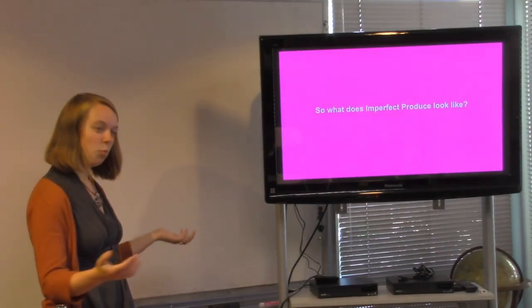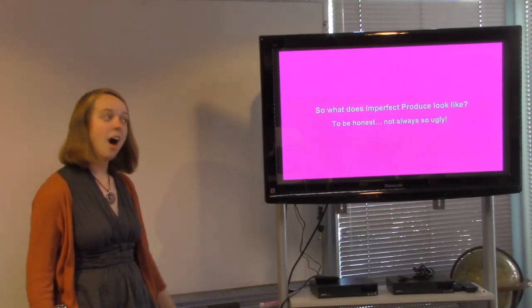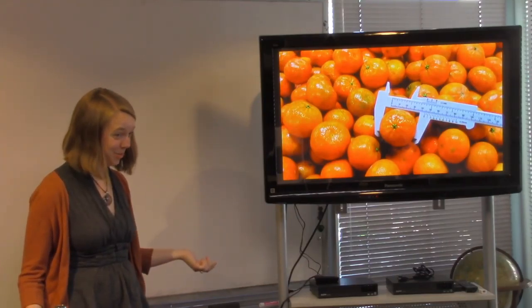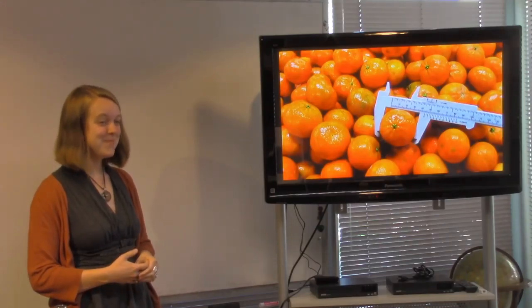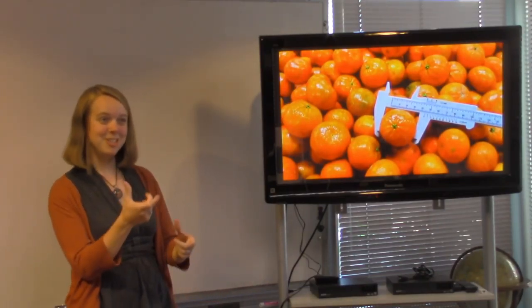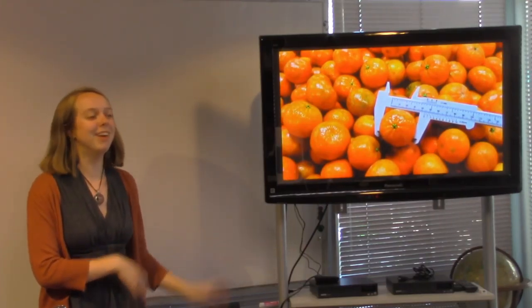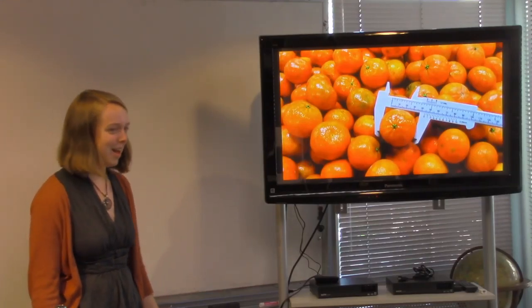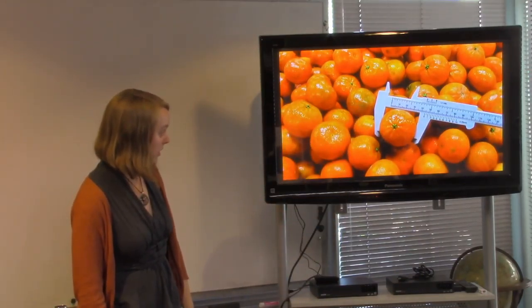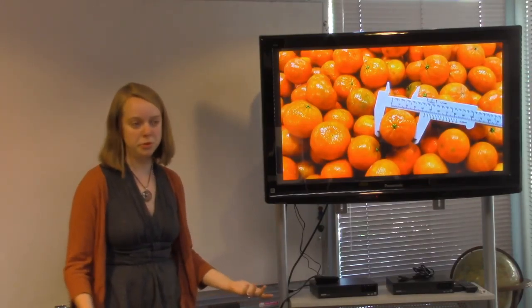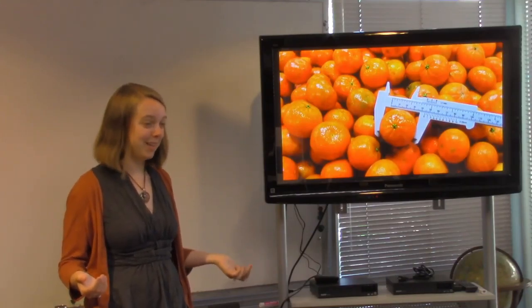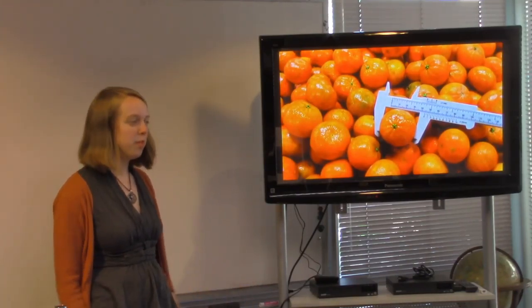So, as you were asking, what does our produce actually look like? Oftentimes, it's not even that ugly. The standards that we have are a little ridiculous. Does anyone have a guess as to why these oranges would have ended up in the landfill? They're small. Exactly. These are too small. This variety of orange is supposed to be between one and three quarters and two and a quarter inches in diameter. And if it's outside of that range, they throw it away. It also has some discoloration. You can see little green spots on these oranges as well. This is oftentimes the sort of stuff that we are getting. Our most common feedback from new customers is actually that our produce doesn't look ugly at all. And they were expecting it all to be super wonky like those VIPs you saw. But most of it looks pretty normal.